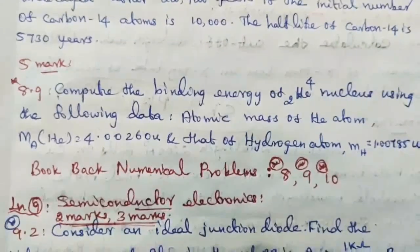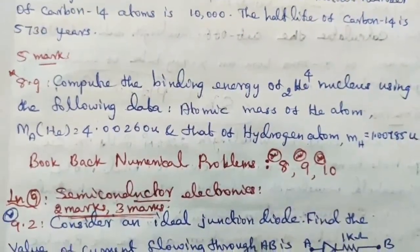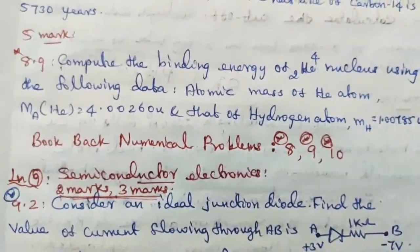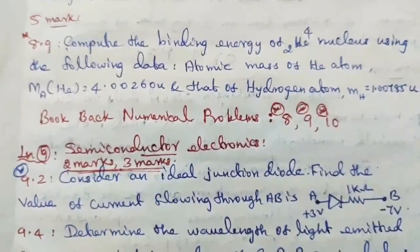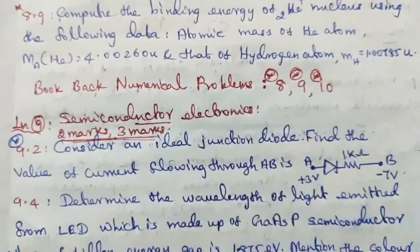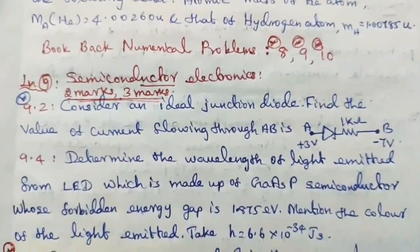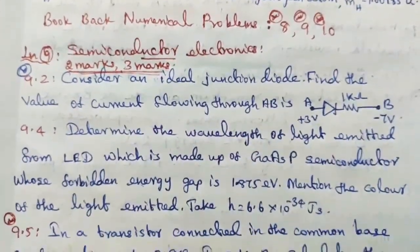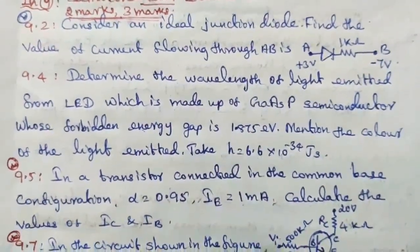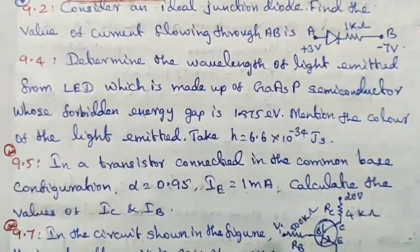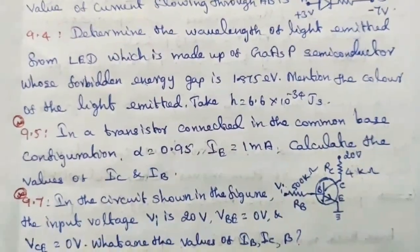Semiconductor Electronics, 2 marks, 3 marks. Question number 9.2. Circuit is given. Then 9.4, 9.5 important, 9.7 important.